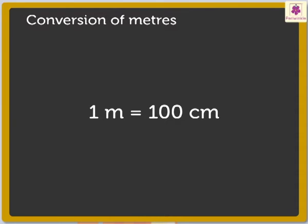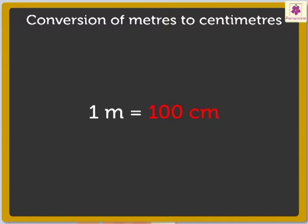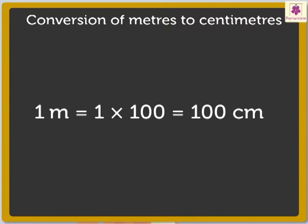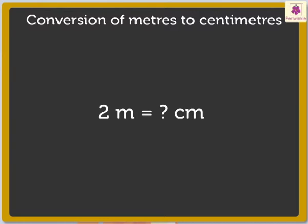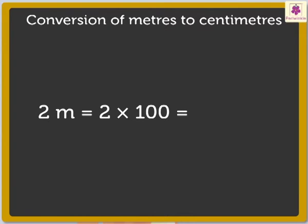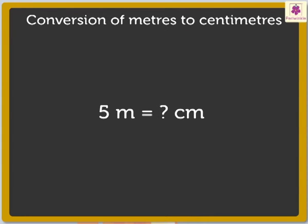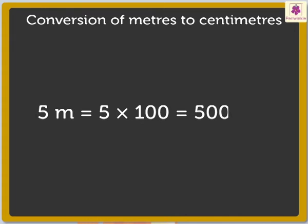1 meter is equal to 100 centimeters. Would you like to convert some meters into centimeters? It is very easy. As I said, 1 meter is equal to 100 centimeters. So, to convert meters into centimeters, we have to multiply the meters by 100. For example, to convert 2 meters into centimeters, we multiply 2 by 100, which is equal to 200 centimeters. I got it. So, if I want to convert 5 meters into centimeters, I have to multiply 5 by 100, which is equal to 500 centimeters.